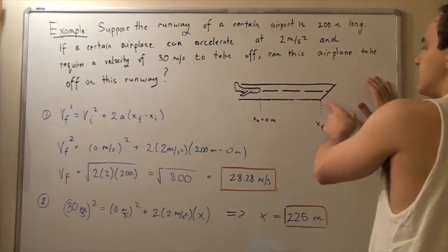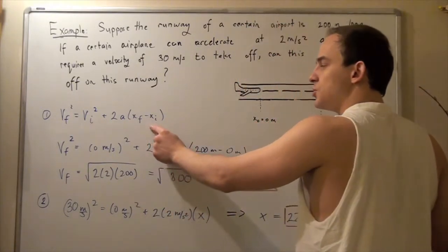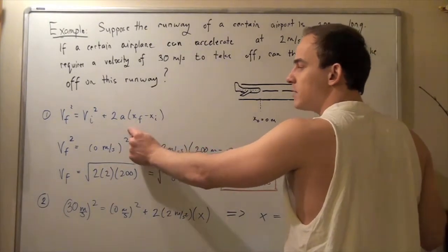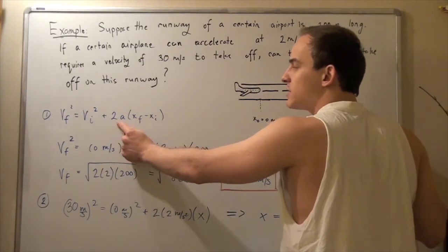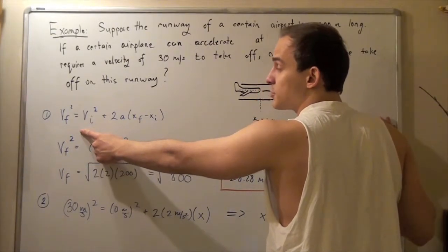So we're going to use the following formula to find our final velocity at position x final. Because we know x initial is simply 0, x final is 200, we know our acceleration, and we know our v initial, which is simply 0 meters per second.